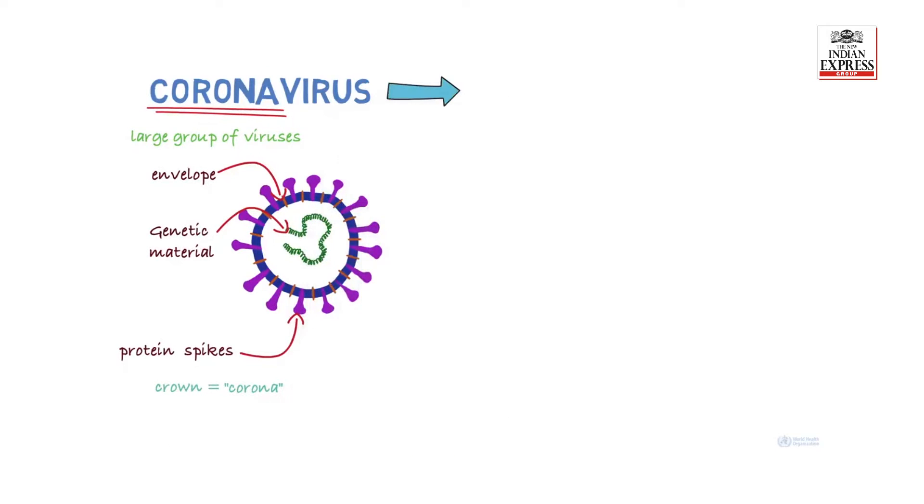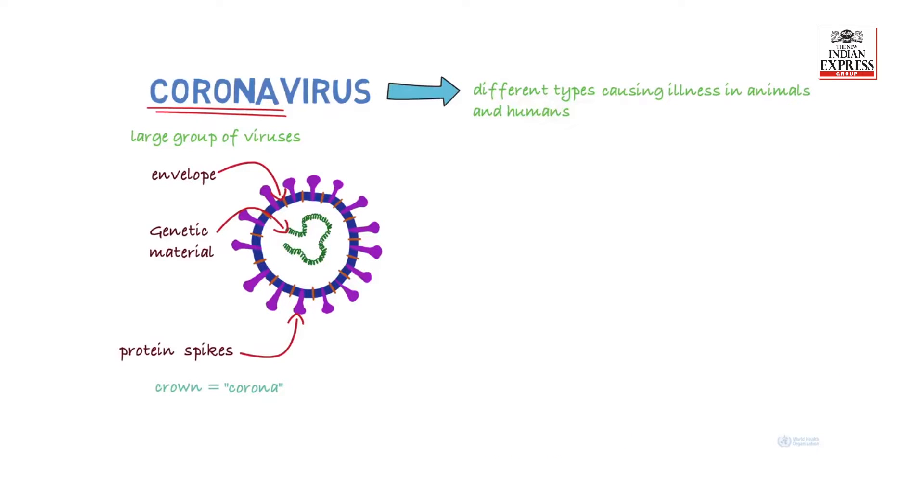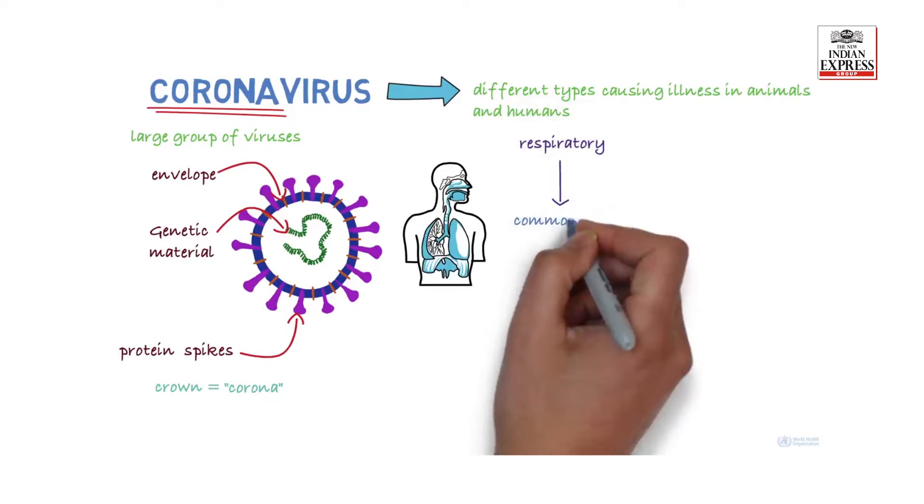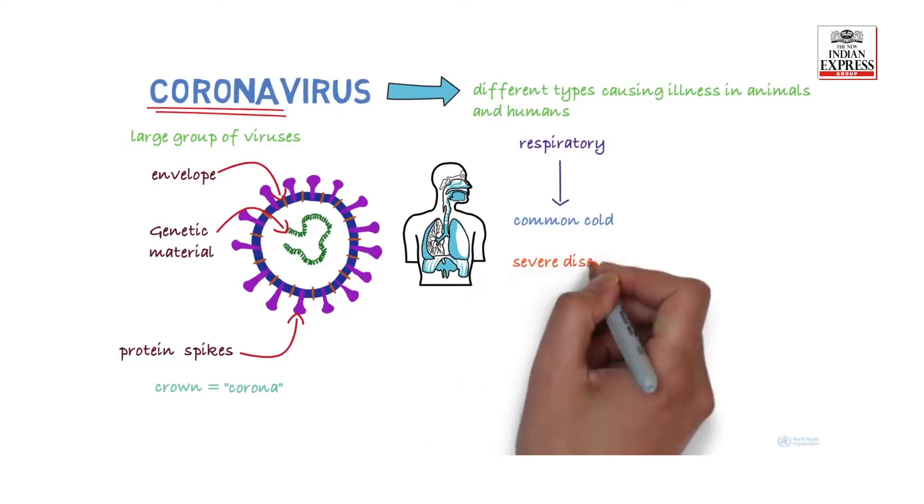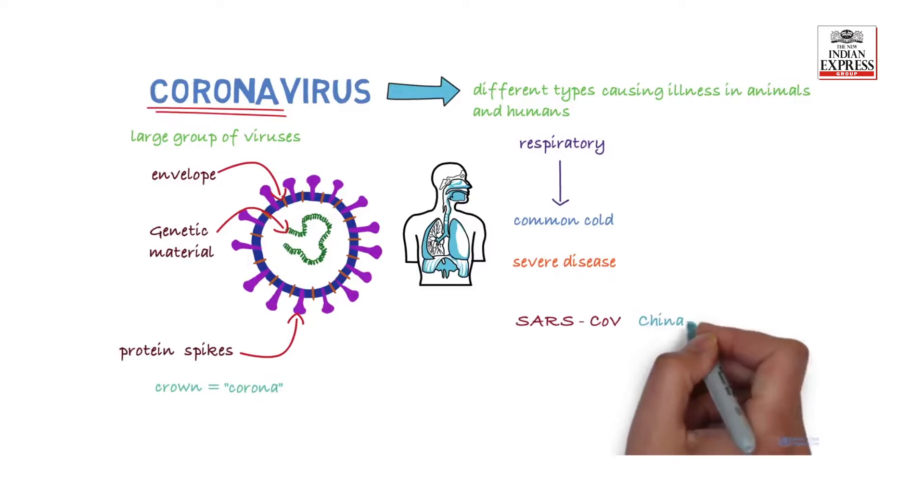There are different types of coronaviruses that cause illness in animals and humans. In humans, coronaviruses can cause respiratory infections ranging from the common cold to more severe diseases. These include the severe acute respiratory syndrome coronavirus first identified in China in 2003.